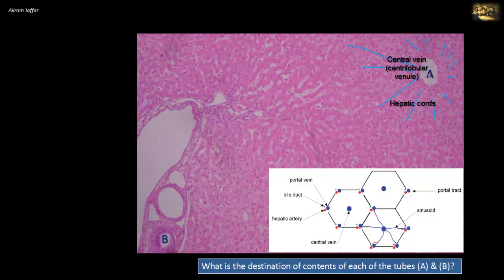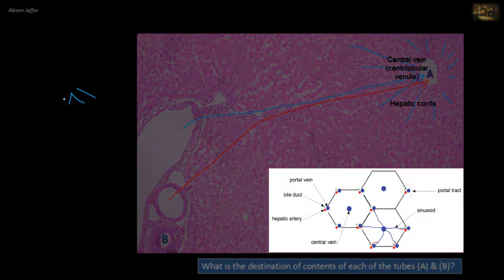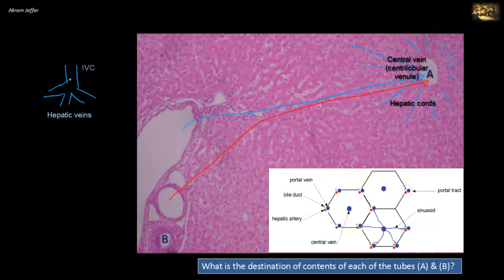The central vein is clearly lined by simple squamous epithelium — the endothelium that lines all blood vessels. You can see the flattened cells, whose shape is reflected in the shape of the flattened nucleus. These central veins are tributaries of hepatic veins. Venous blood comes from a branch of the portal vein in the portal triad, passes into the sinuses of the liver, and empties into the central vein. Arterial blood comes from a branch of the hepatic artery, also going into the sinusoids and emptying into the central vein. These central veins ultimately form three hepatic veins that open into the inferior vena cava, going into the right atrium of the heart.